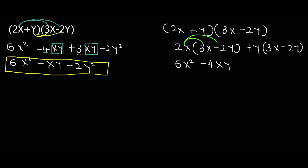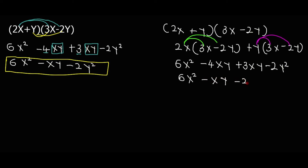Now the second method: 2x times 3x is 6x squared. 2x times minus 2y is minus 4xy. Then y times 3x is plus 3xy, and y times minus 2y is minus 2y squared. From here I add like terms: 6x squared, then roughly minus xy, minus 2y squared. So this is our answer.